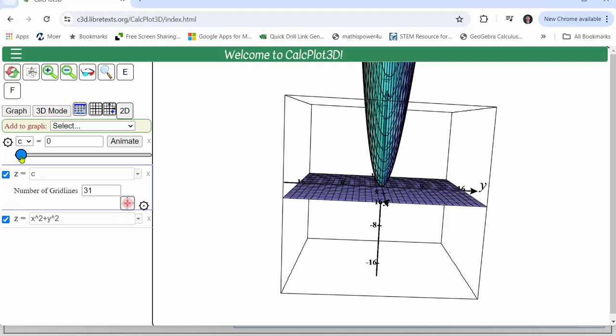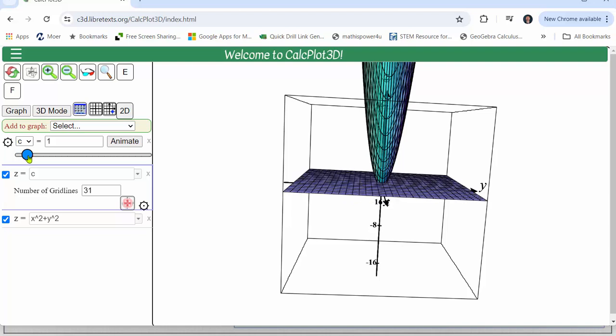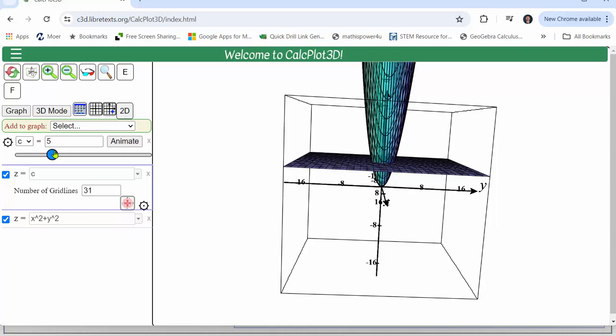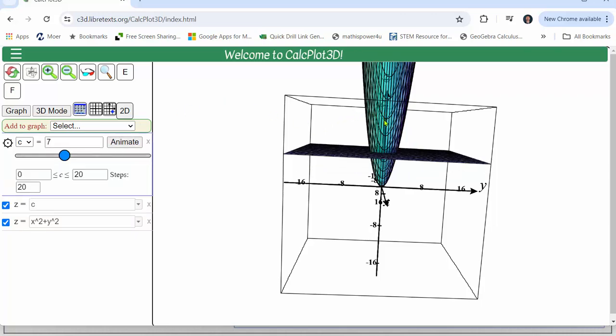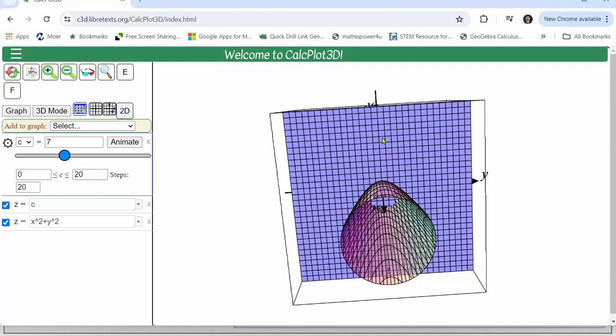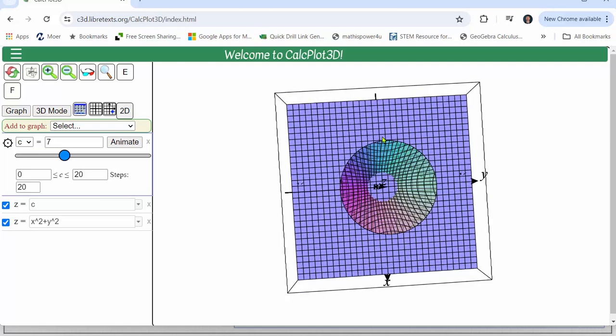So as we animate the plane again each intersection represents a level curve for the function or the surface. If we look down on the xy plane we can see the intersection is a circle.